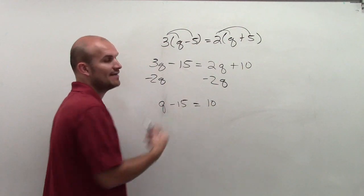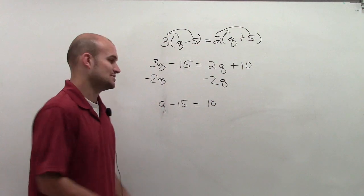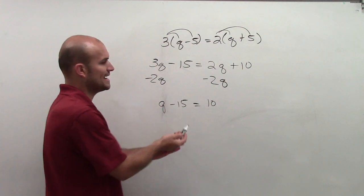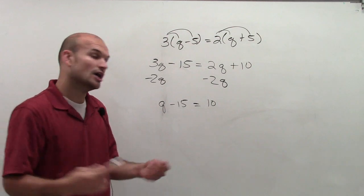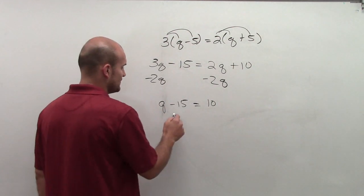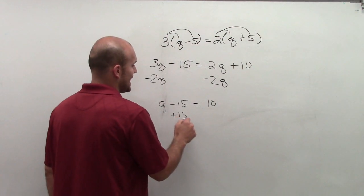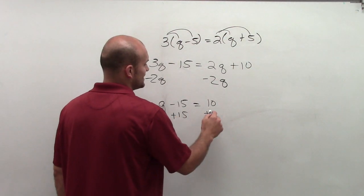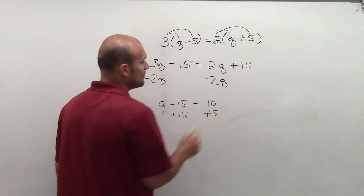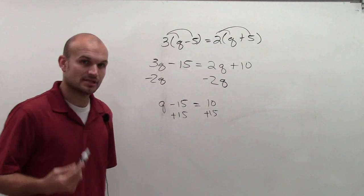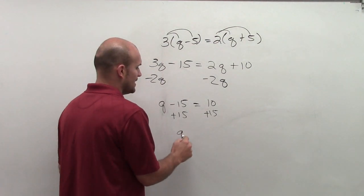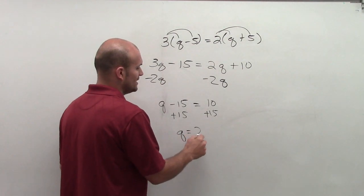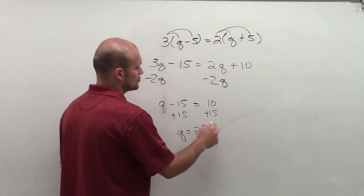Now I have a one-step equation: q minus 15 equals 10. To undo subtracting 15, I'm going to add 15 on both sides using the addition property of equality. And I get q equals 25.